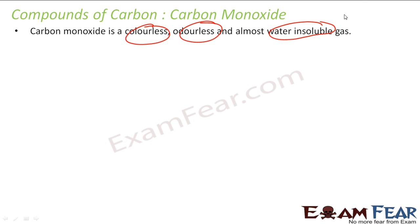Carbon monoxide is CO. It does not form any complex structure, and that is why it is a gas. Every time you think of a compound, you think about why it is a gas, why it has a high melting point. If you think of carbon monoxide, the structure is pretty simple, so it is a gas.